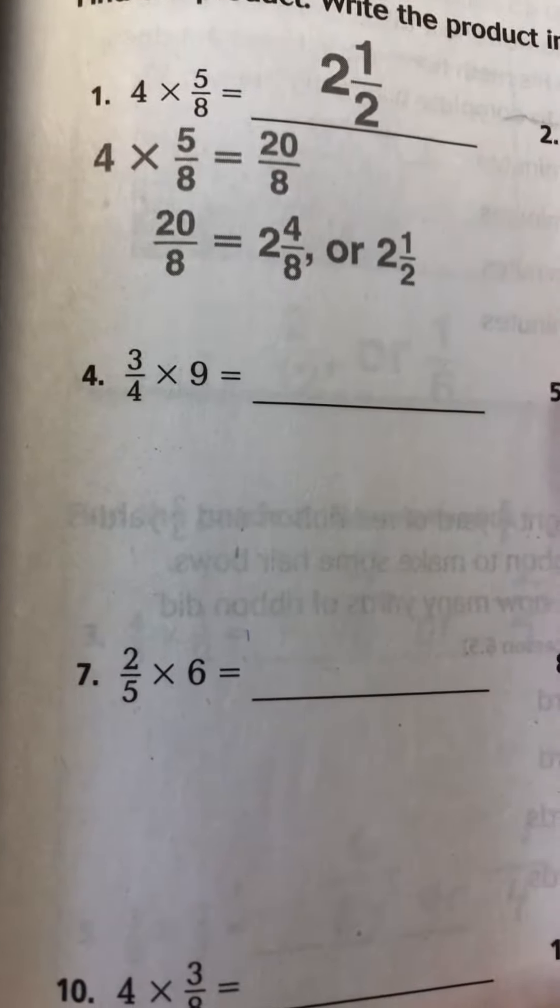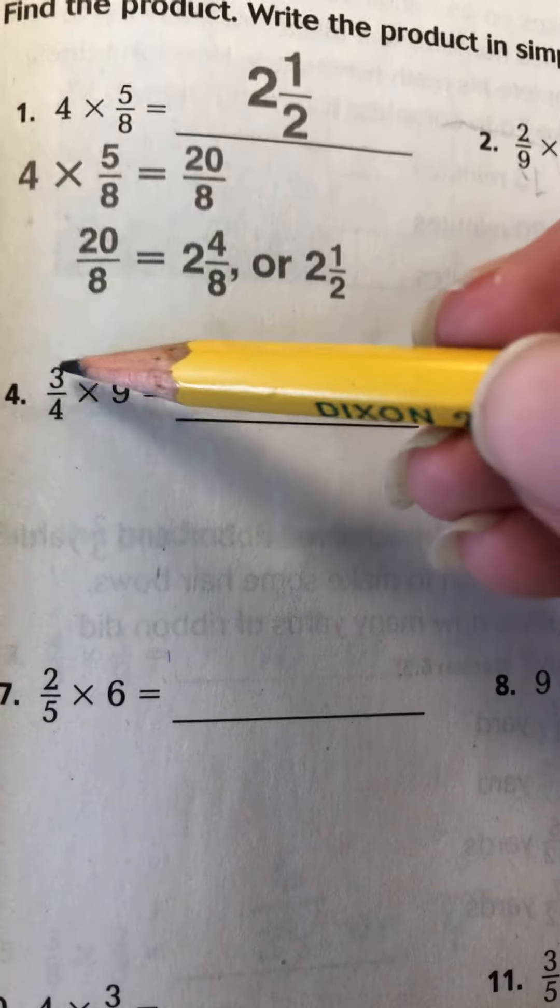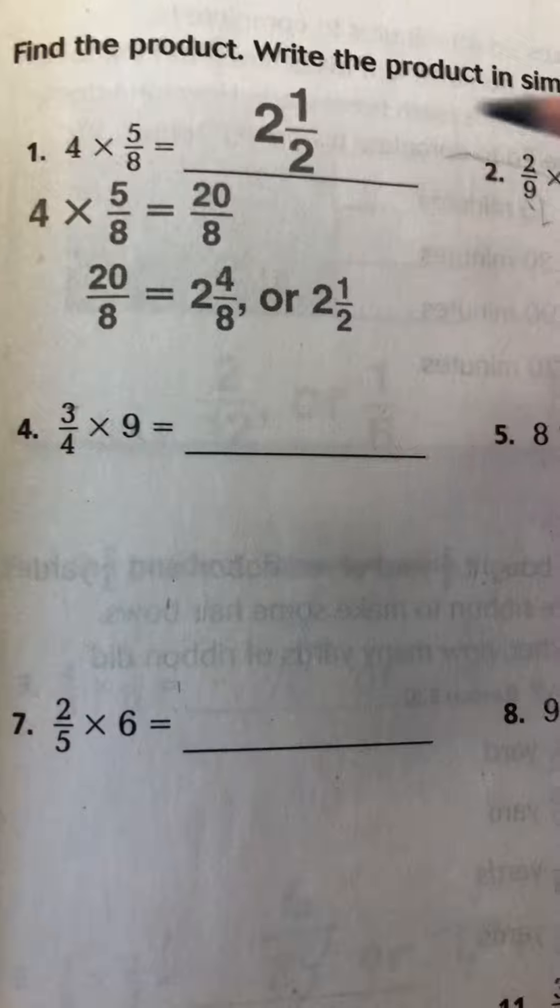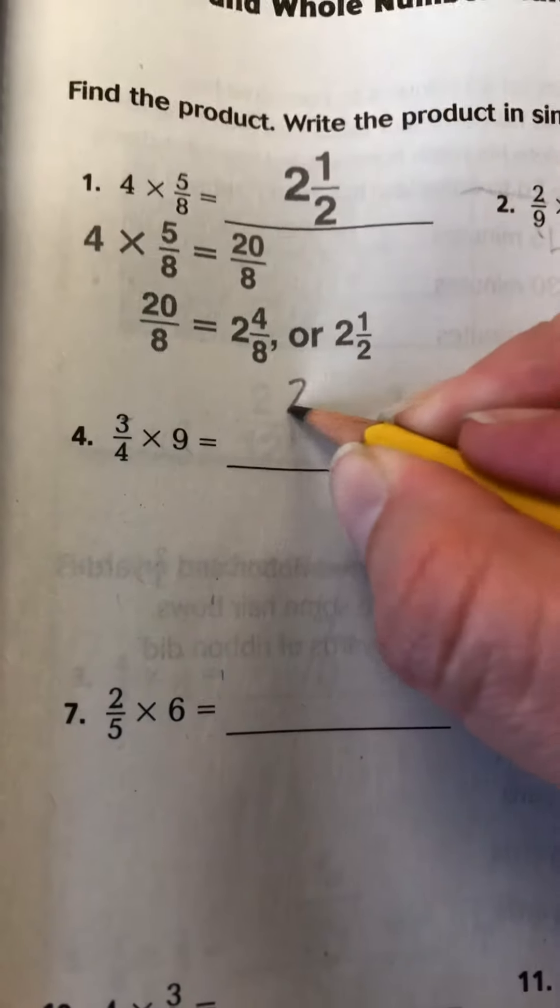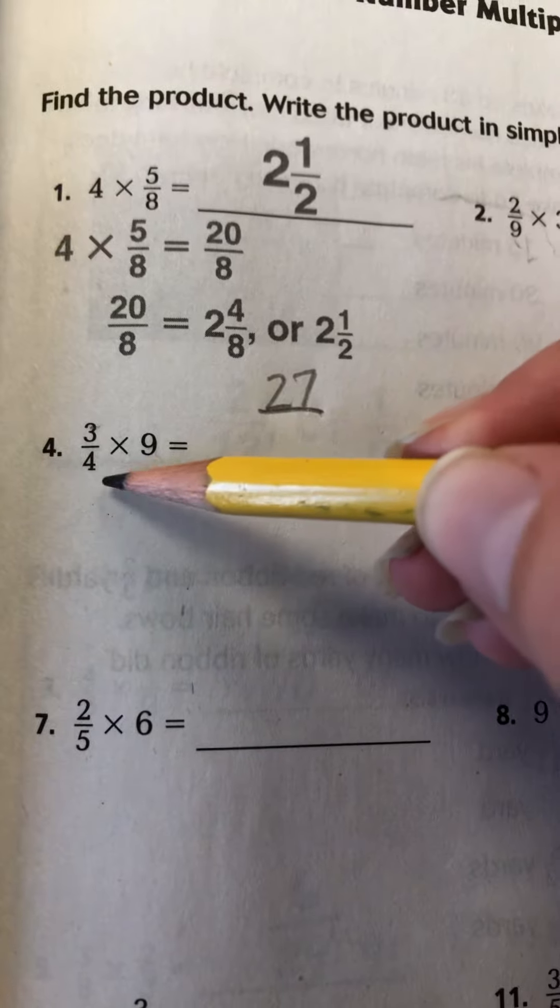All right, let's try another one. So we have 3 fourths times 9. And again, what I like to tell the kids to do is just take your whole number and multiply it by your numerator. So 9 times 3 is 27. That's your new numerator. And then your denominator stays the same.